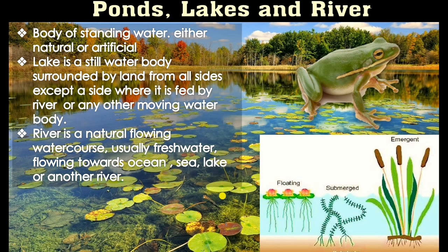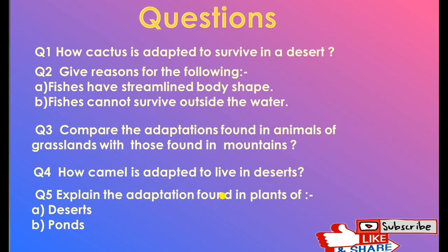Now we have some questions from our chapter. Question 1: How is cactus adapted to survive in a desert? The leaves are modified into spines or are very small, and there is a waxy coating on the stem so that water loss is reduced. The stem is thick and photosynthesis occurs through the stem, all to reduce water loss.